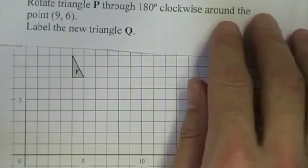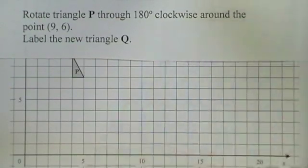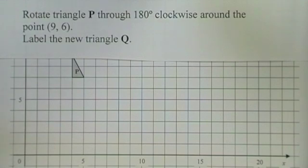The instructions we have are to rotate triangle P through 180 degrees clockwise around the point 9,6. Let's label the point 9,6.